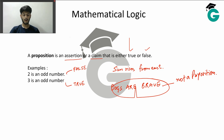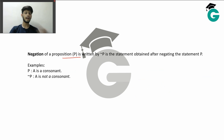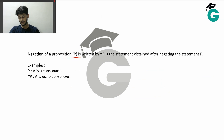Now that we know what a proposition is, let's define what the negation of a proposition is. The negation of a proposition P is just the negated statement. Suppose P is 'A is a consonant' — the negation will be 'A is not a consonant.' We just negated it.